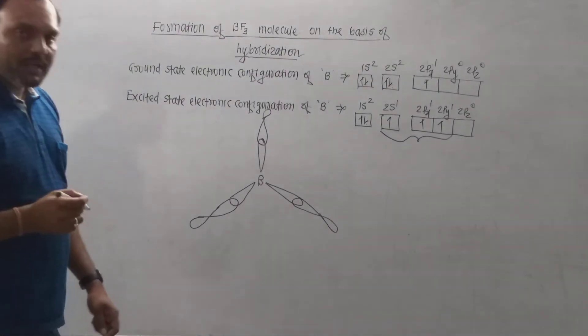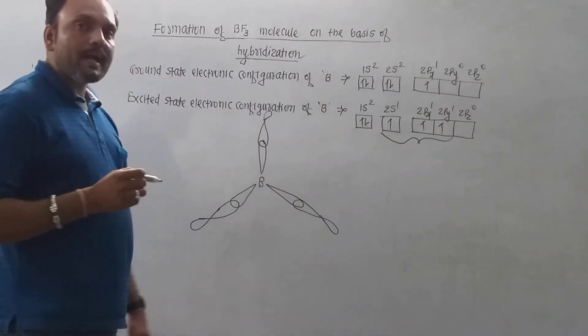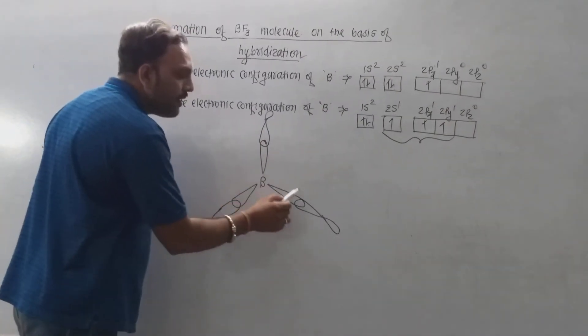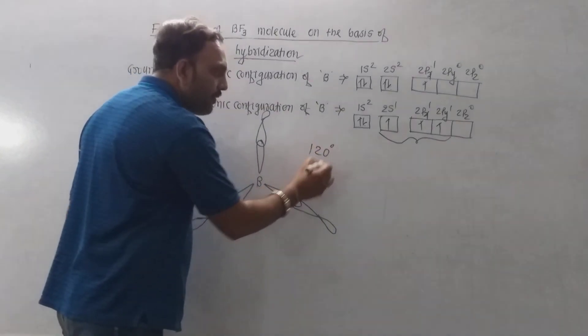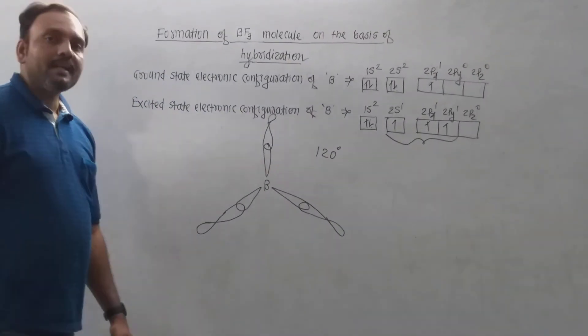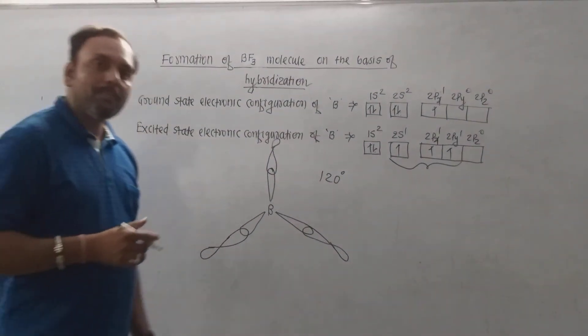Hence, in the boron trifluoride molecule, the F-B-F bond angle is found to be 120 degrees and the geometry is trigonal planar.